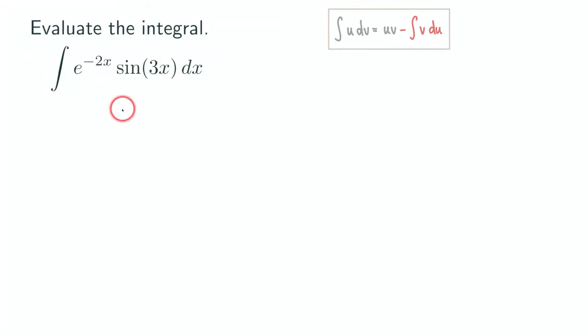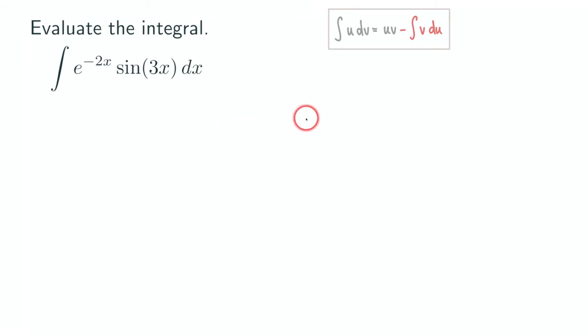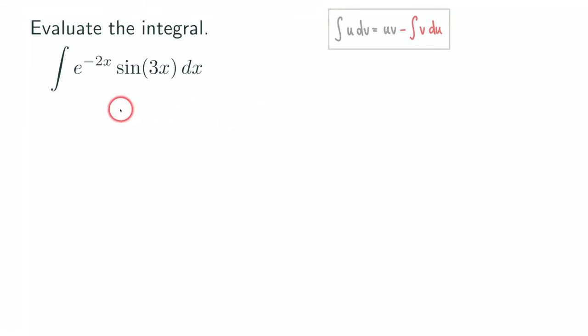We are going to set up our u, v, du, dv table. We'll talk about how to choose u, or what is the strategy of choosing u and dv.